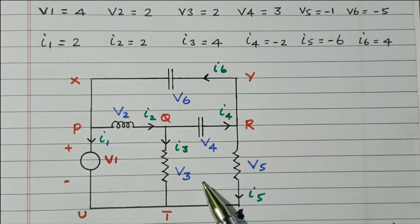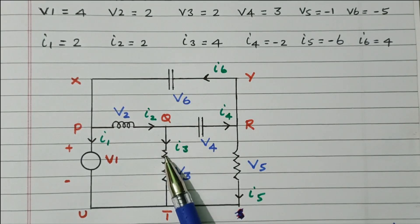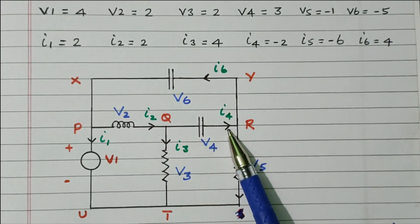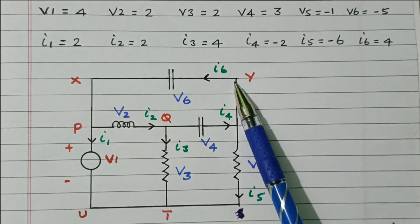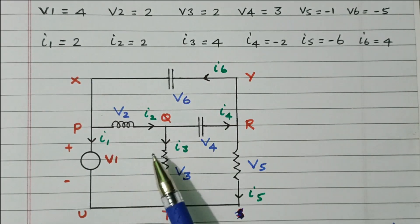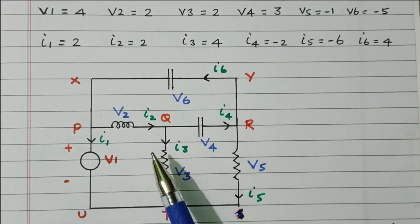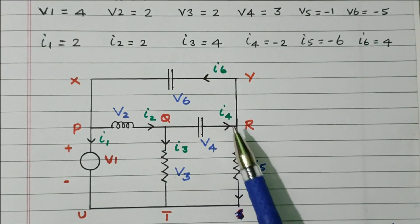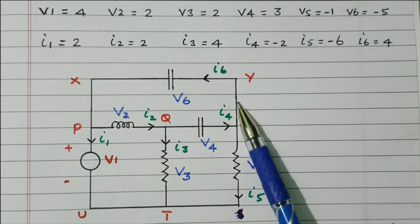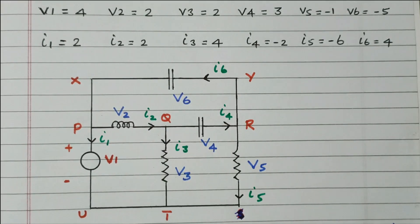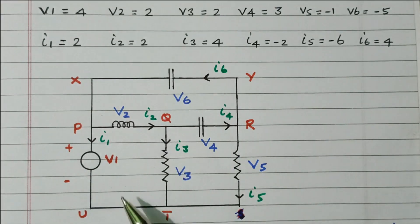Similarly, we analyze the currents. I2 is split into I3 and I4, so I2 = I3 + I4. Then I4 is split into I5 and I6, so I4 = I5 + I6. And I6 equals I1 plus I2. So these three voltage loop equations and three current node equations are now analyzed. We will verify whether KVL and KCL are satisfied.